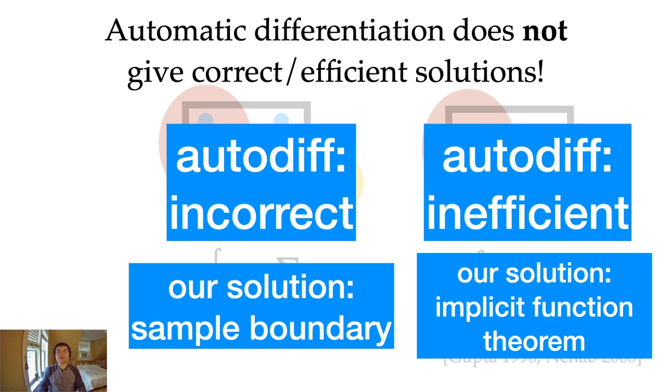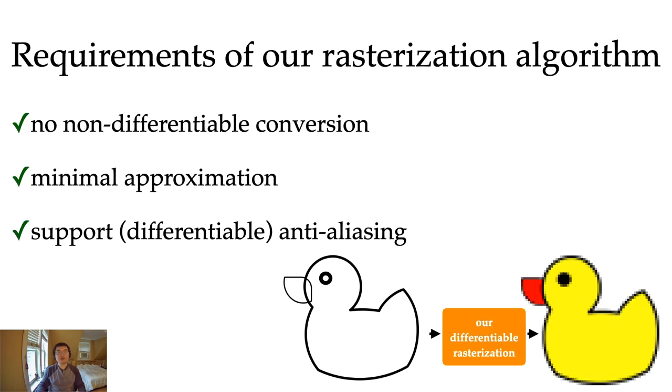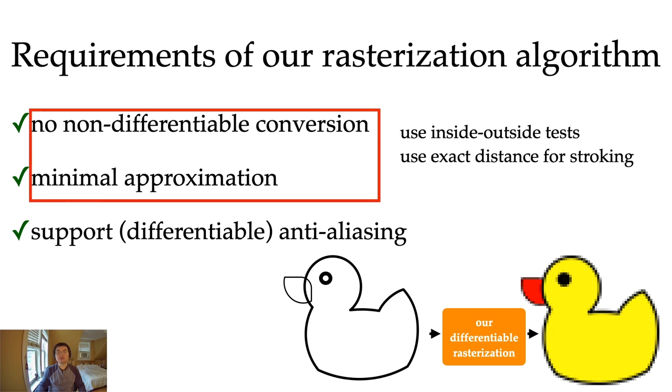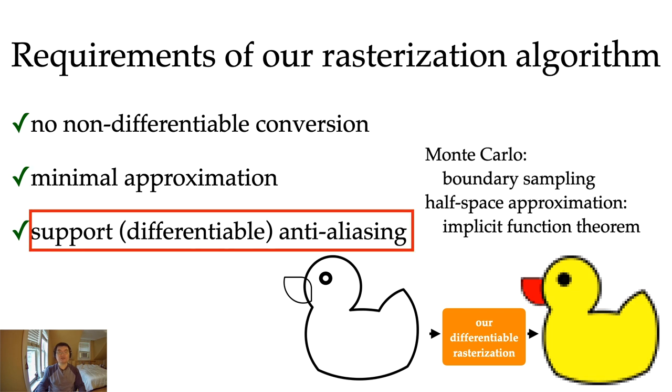To recap, I showed that automatic differentiating anti-aliasing gives undesirable results, and we need specialized solution for correctness and efficiency. Let's review our requirements of our rasterization algorithm. We don't rely on any non-differentiable conversion because we use inside-outside tests. Furthermore, we avoid approximating distance because they can fail for some bad parameters. We support two different kinds of differentiable anti-aliasing. We cannot rely on automatic differentiation because they are wrong and inefficient. Instead, for Monte Carlo, we apply boundary sampling, and for half-space approximation, we apply implicit function theorem to avoid storing tapes.